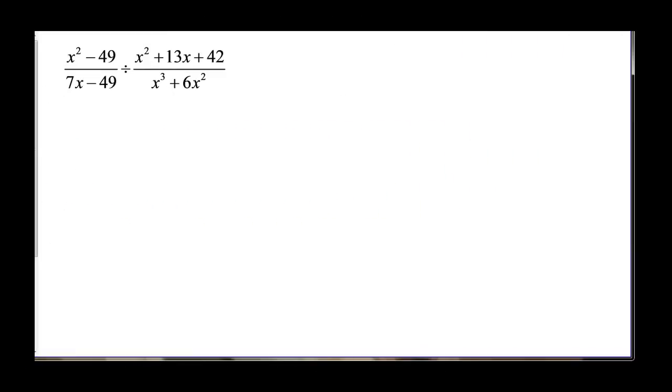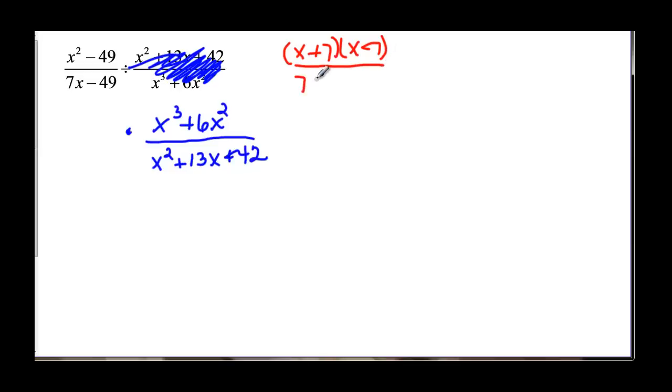So now we have the ugly looking one. But just remember that the first thing we're going to do is write this as a multiplication. And we have x cubed plus 6x squared. And then over x squared. That used to be on the top. Plus 13x plus 42. Alright, so now let's start factoring. The first one will factor x plus 7 and x minus 7. And on the bottom we have a common factor of 7. And x minus 7 is the other factor.